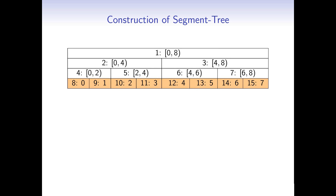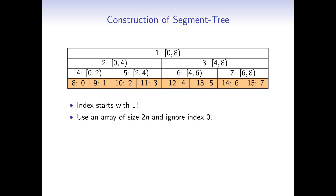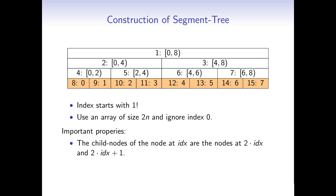Let's look at the construction of the segment tree. I draw the tree and additionally index the cells with numbers from 1 to 15. We store the tree in an array, and these indices represent the indices in that array. The first node gets index 1; in most languages arrays start at 0, so you simply keep index 0 uninitialized. Including index 0, we have exactly 2n nodes where n is the length of the original array. Two important properties: the left child of node i is 2i, the right child is 2i+1, and the parent is i divided by 2.